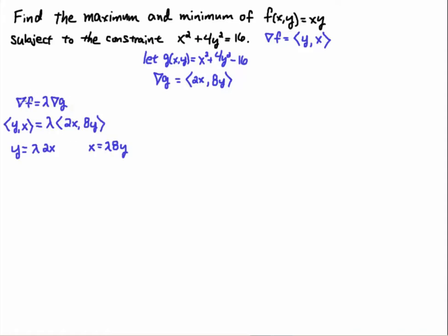The Lagrange multiplier equation states that the gradient of f equals lambda times the gradient of g. So we take the gradient of f, which is (y, x), and the gradient of g, which is (2x, 8y), and multiply that vector by lambda to stretch or contract it to be the same size. Two vectors are equal when their components are equal, so we have: y = lambda·2x for the first component, and x = lambda·8y for the second component.